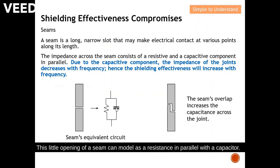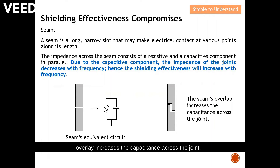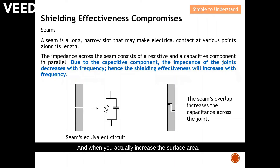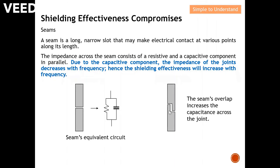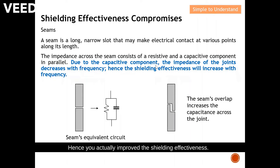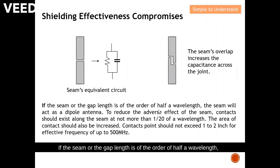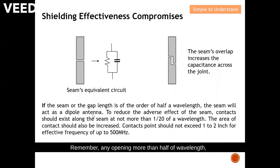This small opening of a seam can be modeled as a resistance in parallel with a capacitor. A seam overlay can increase the capacitance across the joint — instead of one straight opening, you can zigzag it. With the zigzag pattern you increase the surface area, and increasing the surface area increases the capacitance across the joint, hence improving the shielding effectiveness. If the seam or gap is on the order of half a wavelength, the seam will act as a dipole antenna. Any opening more than half a wavelength becomes a dipole antenna capable of providing a path for leakage.